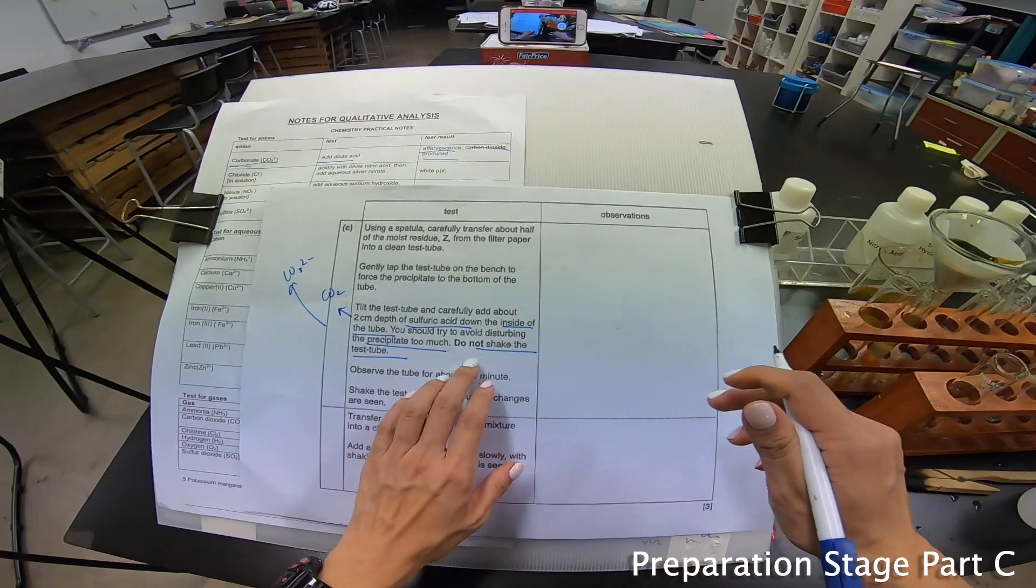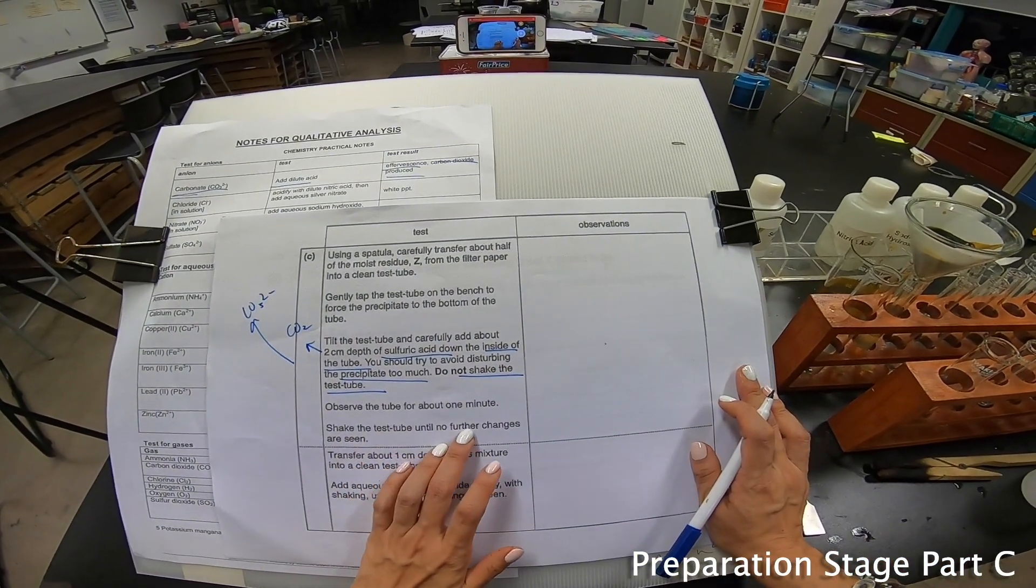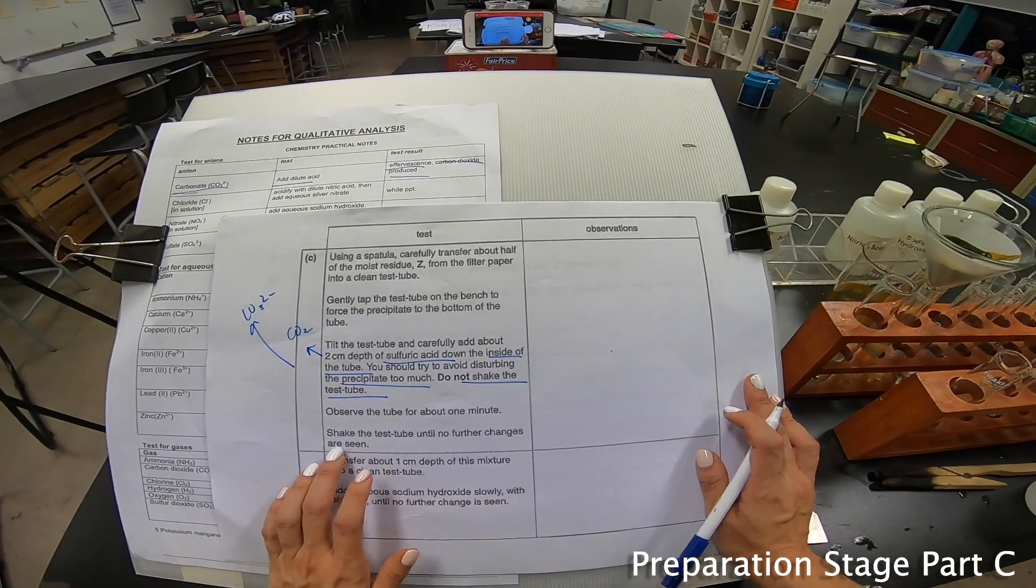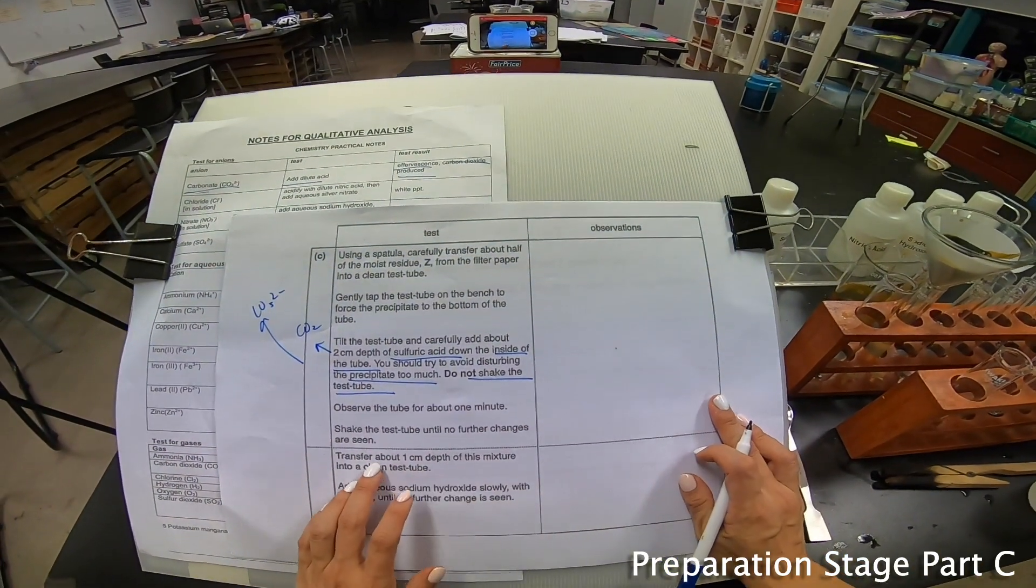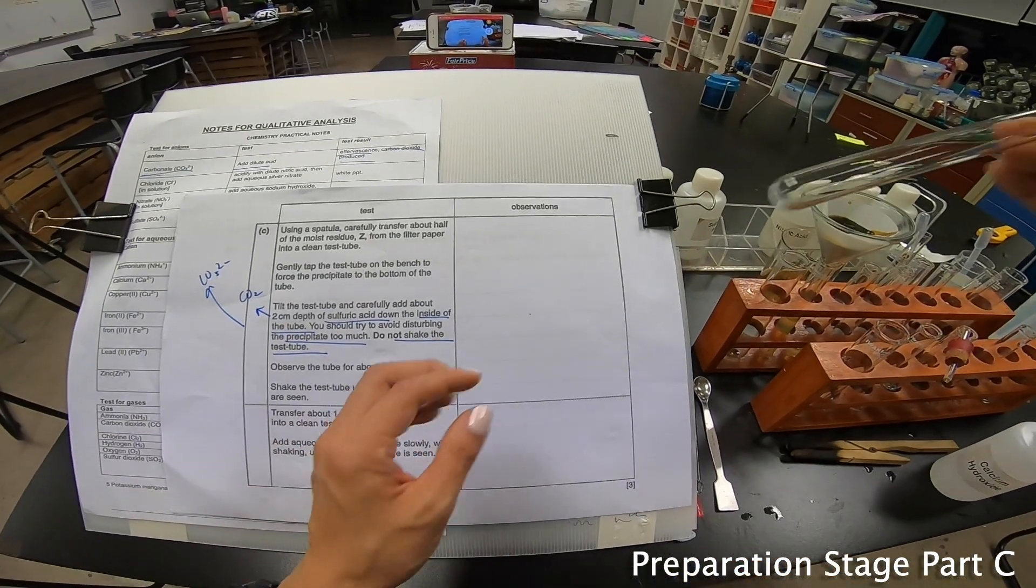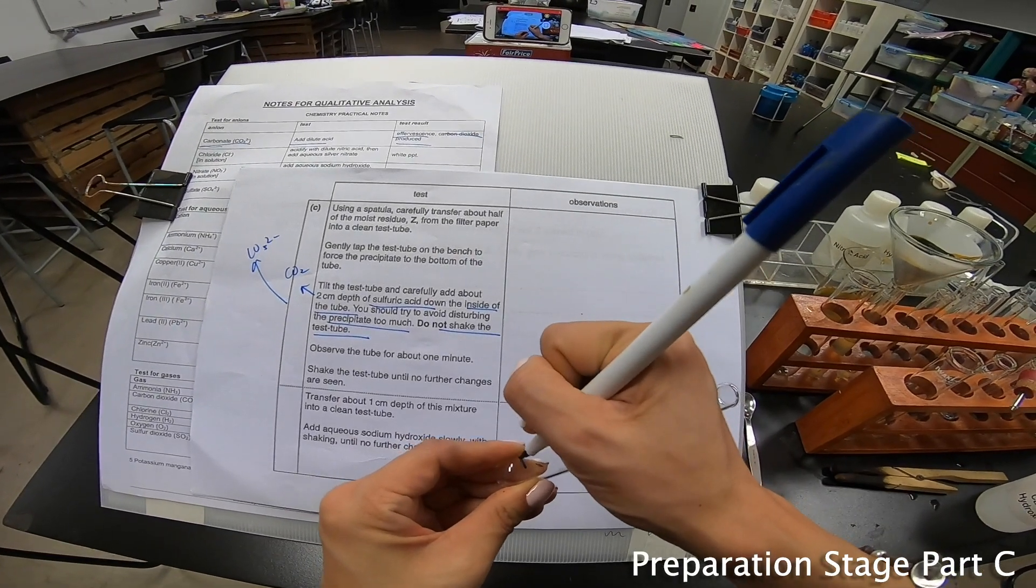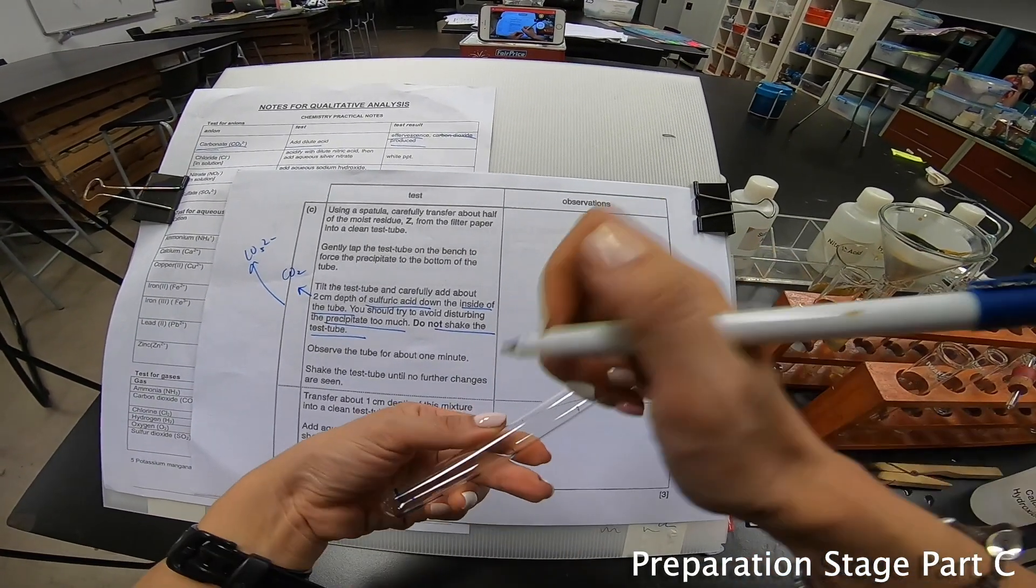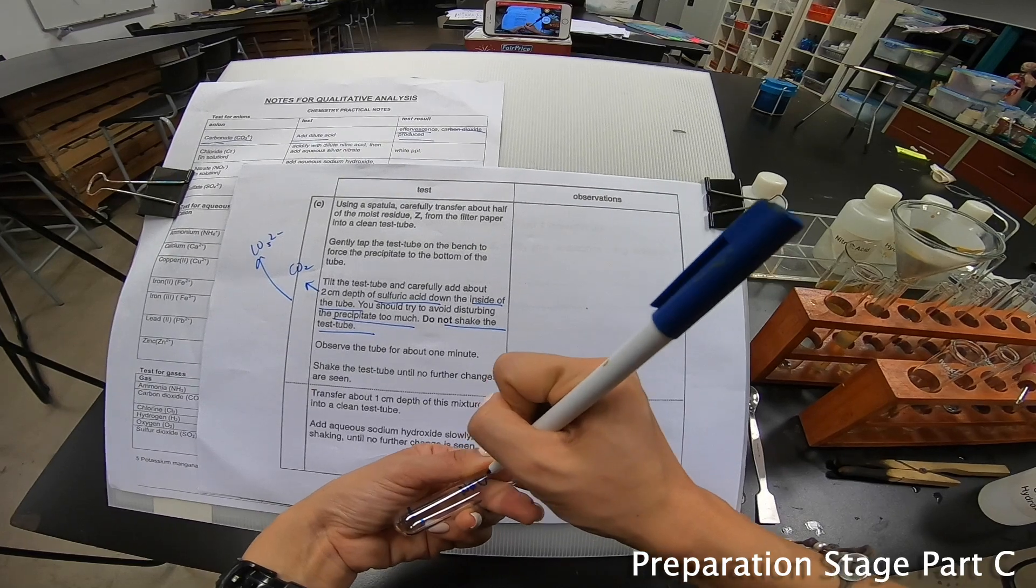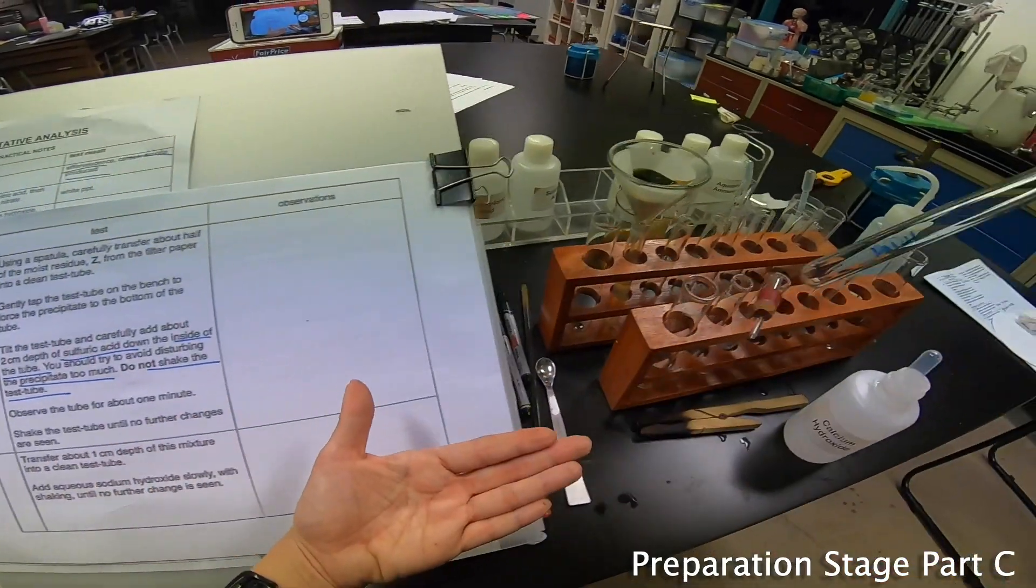They say observe the tube for about a minute. Shake the test tube until no further changes are seen. That is this portion here. Next portion, transfer about 1 cm of this into a clean test tube, and then this part you add sodium hydroxide. Do it with shaking without further changes seen.